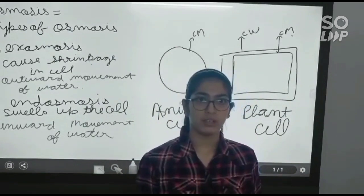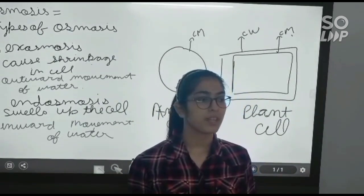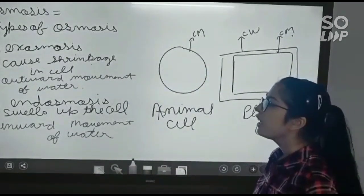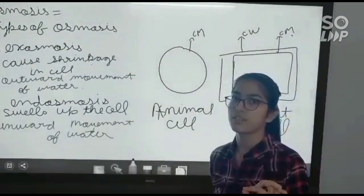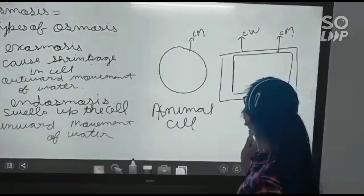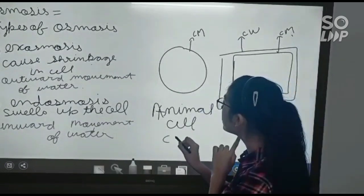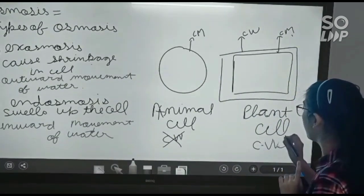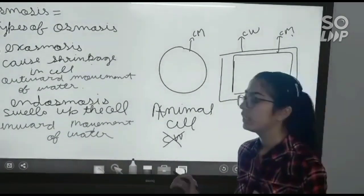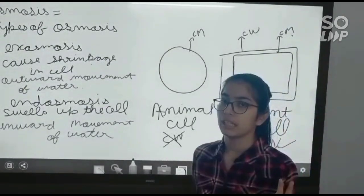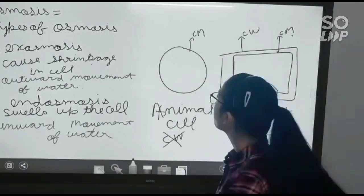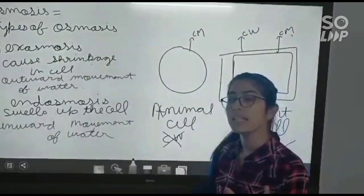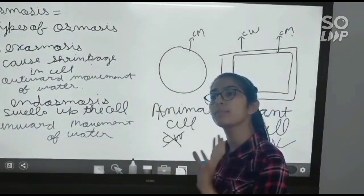Now, what is the semi-permeable membrane? Let's revise. We all know cells. There are two kinds of cells: animal cells and plant cells. There is a very basic difference — the cell wall is not in animal cells, but it is in plant cells. Cell wall is a freely permeable membrane. Cell membrane is a selectively permeable membrane and a semi-permeable membrane.